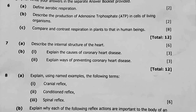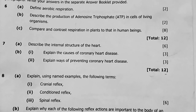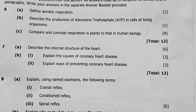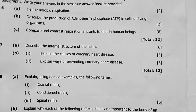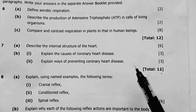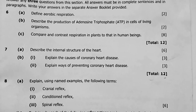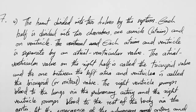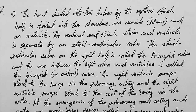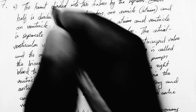Question 7: describe the internal structure of the heart for 6 marks, then explain the causes of coronary disease, and explain ways to prevent coronary disease for 3 marks each — totalling 12 marks. Let's get to question 7.